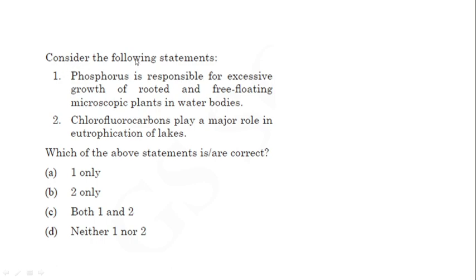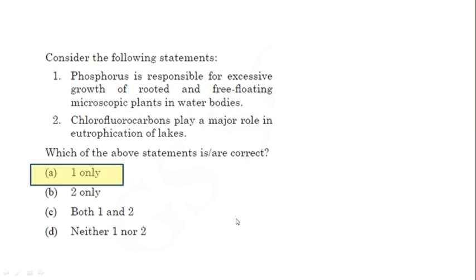The second question: consider the following statements. First, phosphorus is responsible for excessive growth of rooted and free-floating microscopic plants in a water body — this is correct, as eutrophication or algal bloom correlates with accumulation of phosphorus, causing proliferated growth of free-floating microscopic plants like algae. Second, chlorofluorocarbons play a major role in eutrophication — this is incorrect, as chlorofluorocarbons are related to ozone depletion and have no correlation with the phosphorus cycle. So the answer is option 1 only.